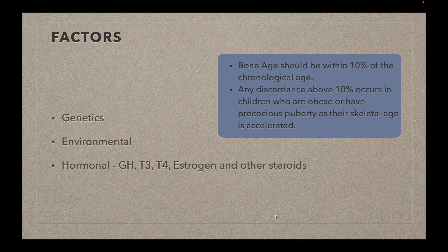Bone age should be within 10% of the chronological age. If there is any discordance above 10%, that may indicate the child is either obese or has precocious puberty, because in those cases the skeletal age is accelerated.